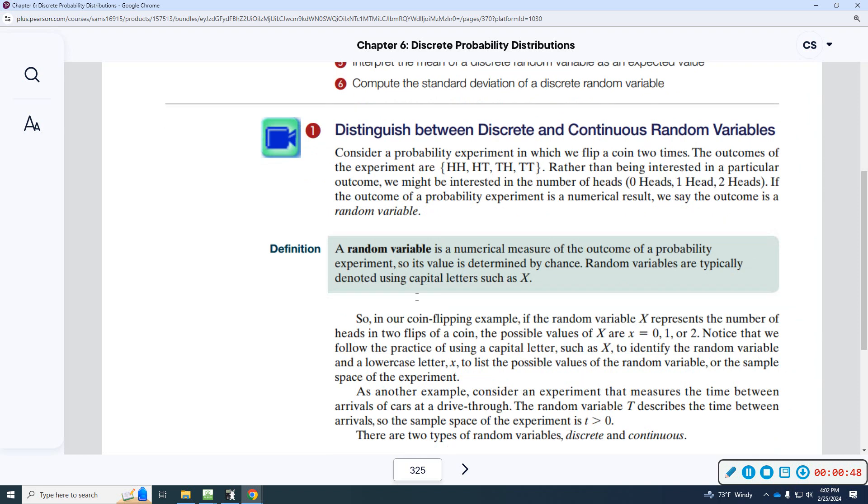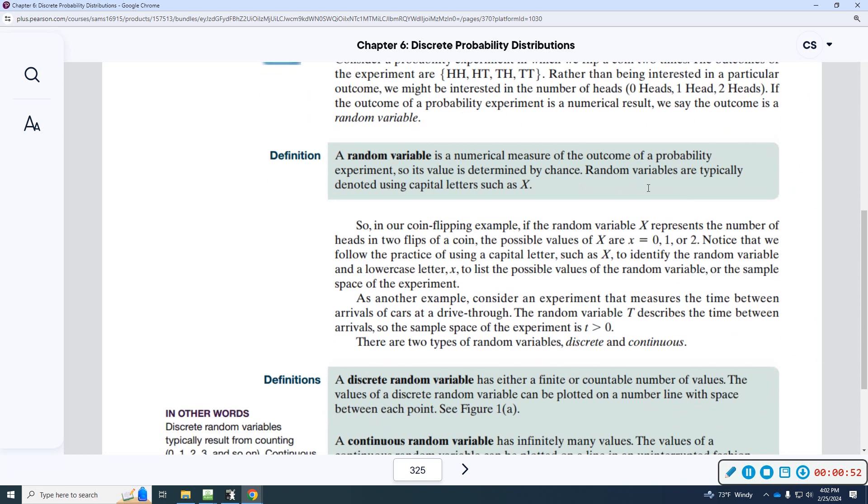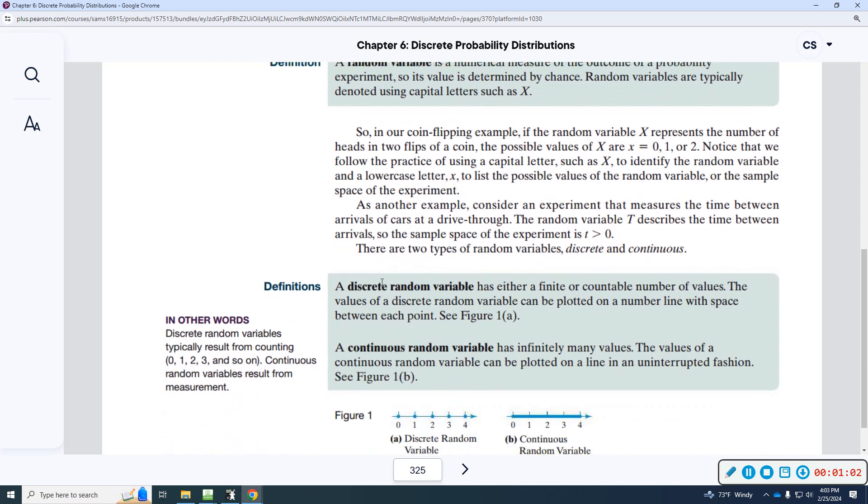All right, so let's look at the definitions first. In the green boxes, you definitely want to pay attention to these definitions. What a random variable is, because you will always see some sort of vocabulary at the beginning of each section. So, you've got random variable. You have discrete and continuous. These are the most important.